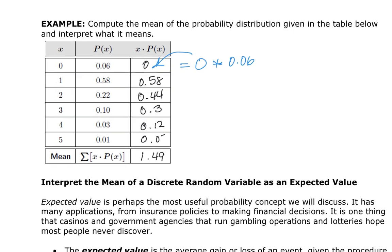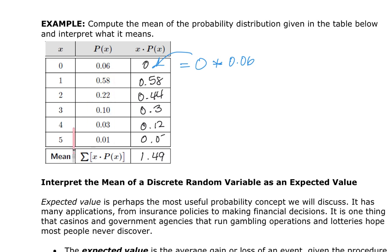So depending on what this represented — maybe this was the number of movies somebody watches — this is the probability of watching zero movies that month, one movie, two, three, four, five movies that month. So the expected value is that person would watch 1.49 movies on average. Or if this represented the number of times you run to the grocery store in a day, you would expect to go to the grocery store 1.49 times a day — whatever it represents.